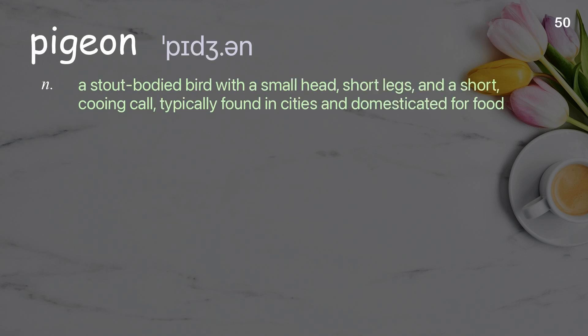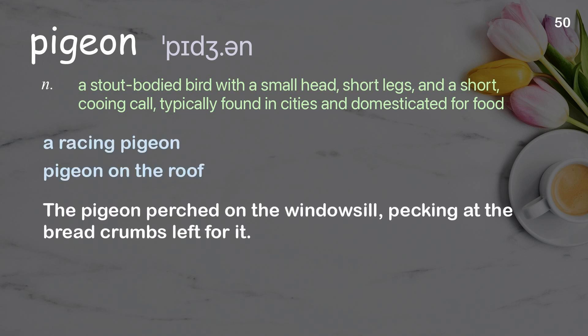Pigeon: A stout-bodied bird with a small head, short legs, and a short cooing call, typically found in cities and domesticated for food. Examples: A racing pigeon. Pigeon on the roof. The pigeon perched on the windowsill, pecking at the bread crumbs left for it.